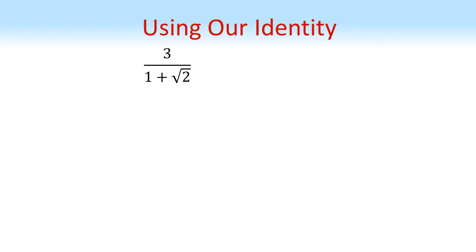Another use for the difference of two squares is rationalizing the denominator of a fraction. So here we have 3 over 1 plus root 2. If we times top and bottom by 1 minus root 2...